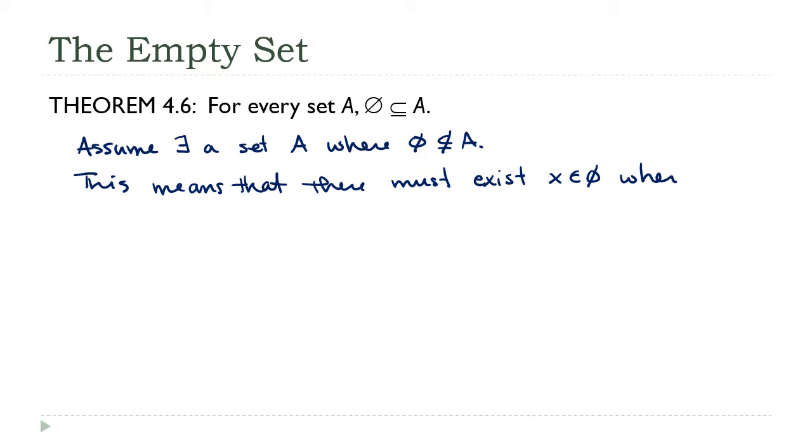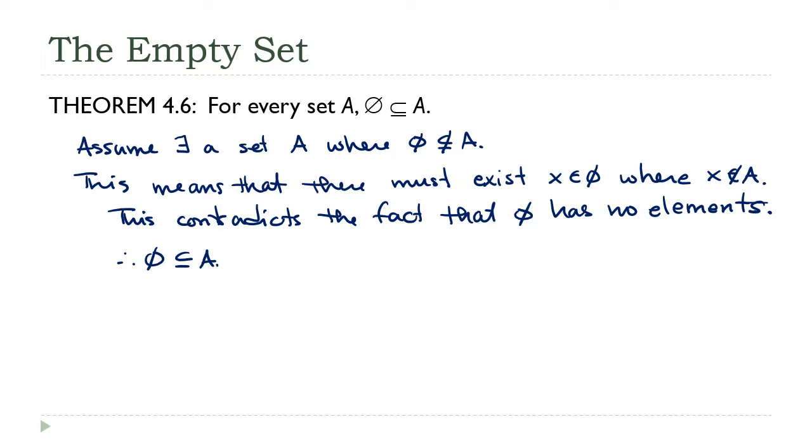X an element of the empty set where x is not in A. But there's our problem. That's a contradiction. This contradicts the fact that the empty set has no elements. Therefore, the empty set must in fact be an element of A, and that's what we needed to show.